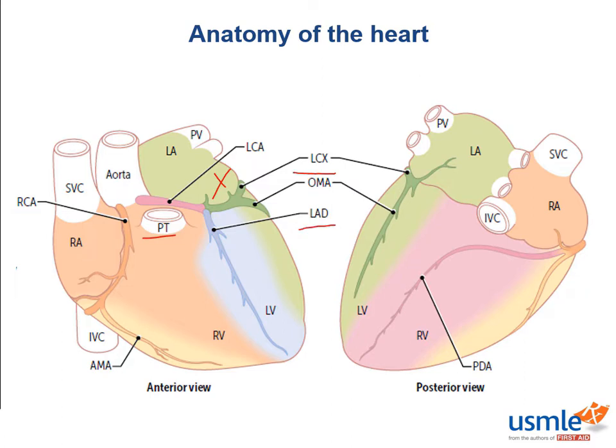The LAD, as indicated in the name, descends anteriorly in the anterior interventricular groove towards the apex. On this course it gives off branches to supply the anterior two-thirds of the interventricular septum as well as the anterolateral papillary muscle and anterior surface of the left ventricle.